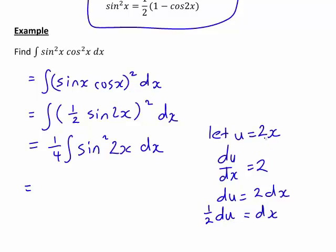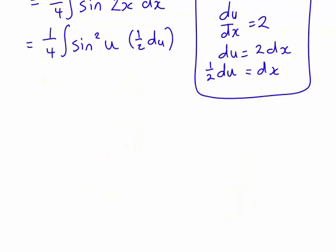So substituting in u and du, this becomes 1 quarter times the integral of sine squared u, 1 half du. And again, that 1 half there can just come outside the integral sign as well, so that we get 1 quarter times 1 half is 1 eighth, times the integral of sine squared u du.